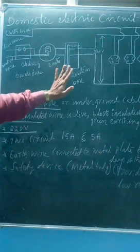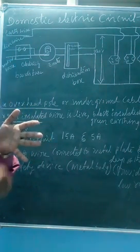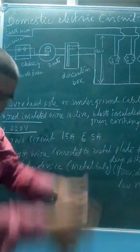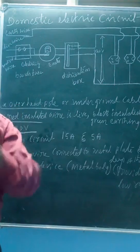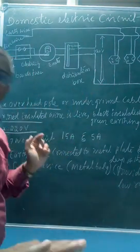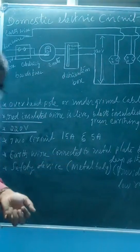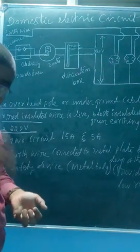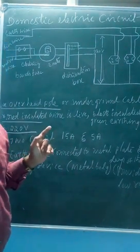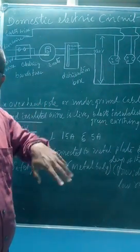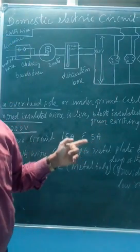This is the way of connecting the domestic circuit in your house. The earthing wire is a green colored insulated wire. It starts from your house and connects deep into the earth. The earthing wire is a safety device — just like a fuse — to protect against electric shock. When we get an electric shock, the current goes through the earthing wire into the earth, and we become safe.